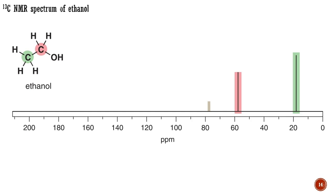The peaks at 77 ppm, shaded brown, are those of the usual solvent, deuterated chloroform, and can be ignored for the moment. When you look at a real NMR spectrum, you will see that the scale does not appear to be in magnetic field units, nor in frequency, nor yet even energy units, but in parts per million (ppm). There is a very good reason for this: the exact frequency at which the nucleus resonates depends on the external applied magnetic field, meaning that if the sample is run on a machine with a different magnetic field, it will resonate at a different frequency.